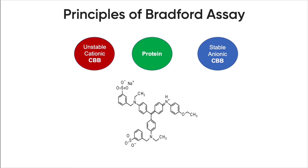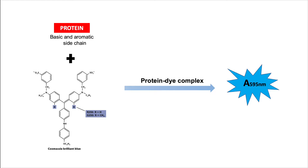When the dye binds to protein, it is converted to a stable, unprotonated blue form. It is this blue protein-dye complex that is detected at 595 nm in the assay using a spectrophotometer or microplate reader. During the formation of this complex, the red form of Coomassie dye first donates its free electron to ionizable groups on the protein, which causes a disruption of the protein's native state, consequently exposing its hydrophobic pockets.